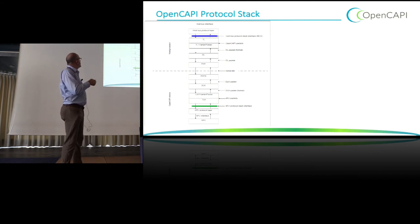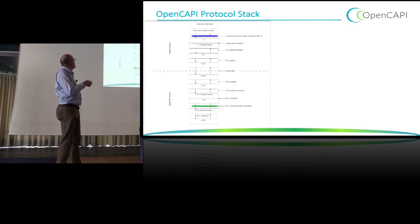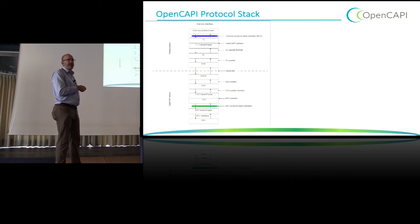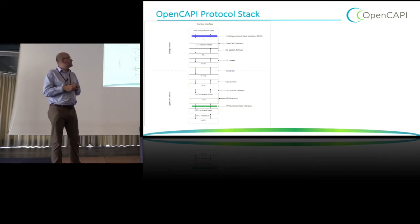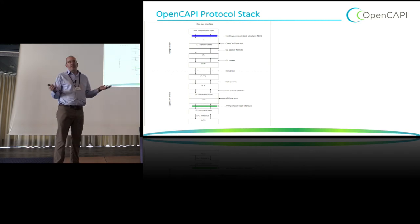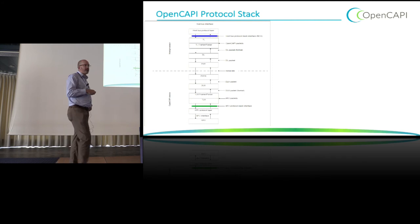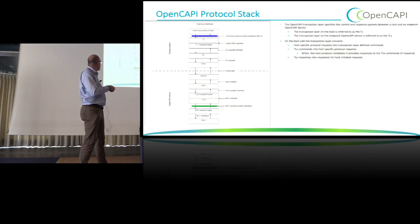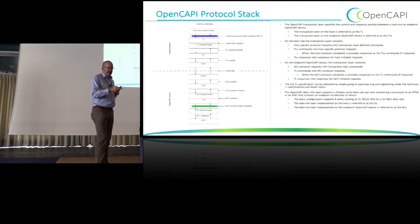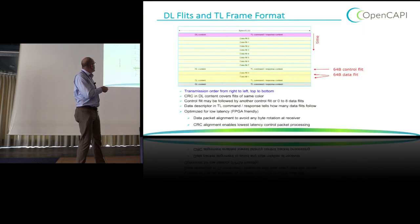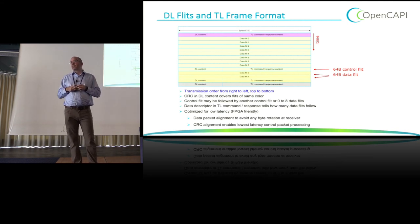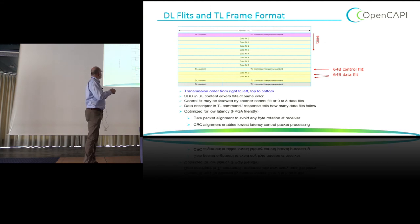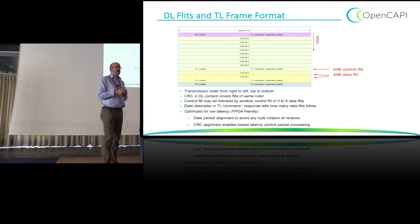From a protocol stack perspective, it's fairly similar to PCIe — the difference is in the thickness of the layers. You've got a transaction layer, data link layer that does data replay, down to your PHY and serial link, and then different DL and TL on the accelerator side. These are different because it's an asymmetric protocol. The DLX layers are actually quite similar since both have to replay the same way, but the transaction layer on the AFU/accelerator side is very simple. We've built these items onto a Xilinx FPGA, and the LUT utilization is about 2%, so it's quite low overhead.